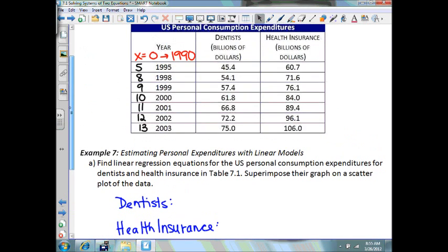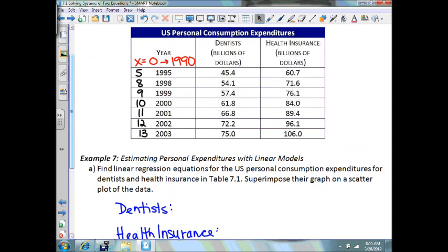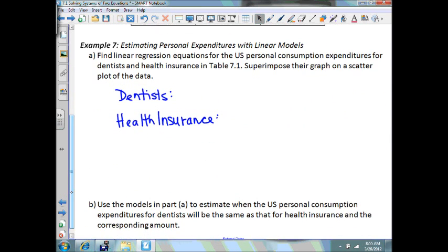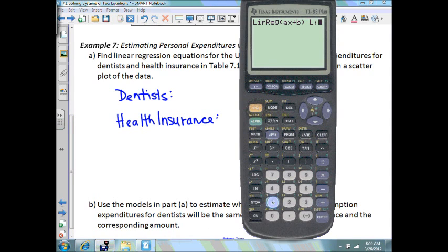If you remember right, we made list 1 as the year, list 2 as the dentist, list 3 as the health insurance. So when we do this we want 2nd 1 for the year, 2nd 2 for the dentist, and then in order to put this equation into your y equals we press the bars.